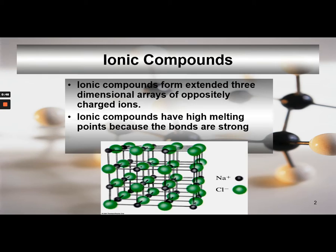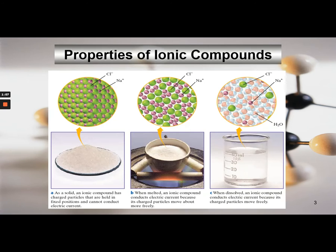In these particular intermolecular attractions, the bonds between the ions are stronger than the bonds between nonmetals of covalent compounds. So of all the intermolecular attractions and interactions, ionic compounds have the strongest bonds. For example, sodium chloride as a solid is a crystalline structure where the atoms are held in fixed positions.